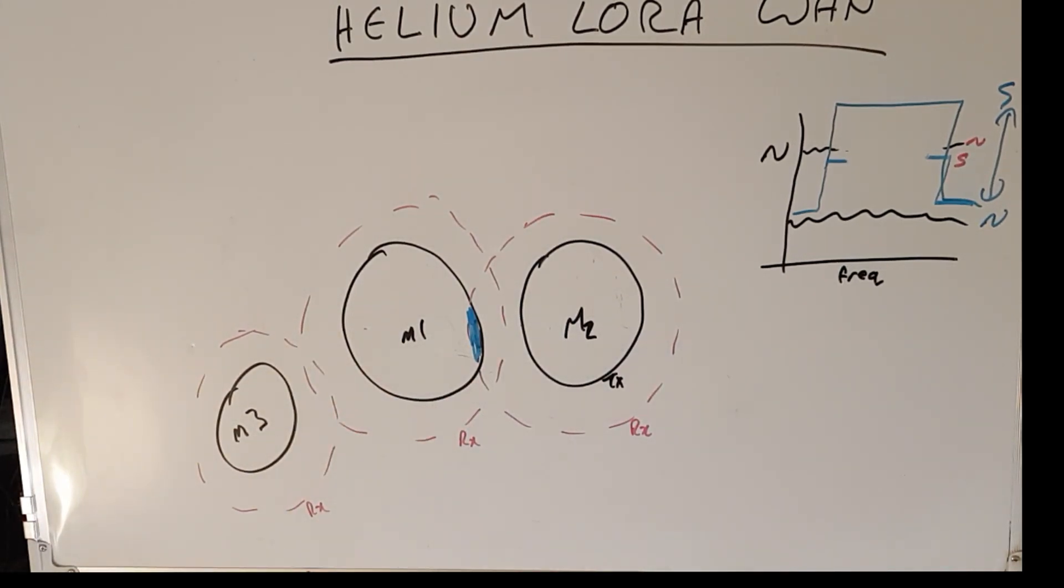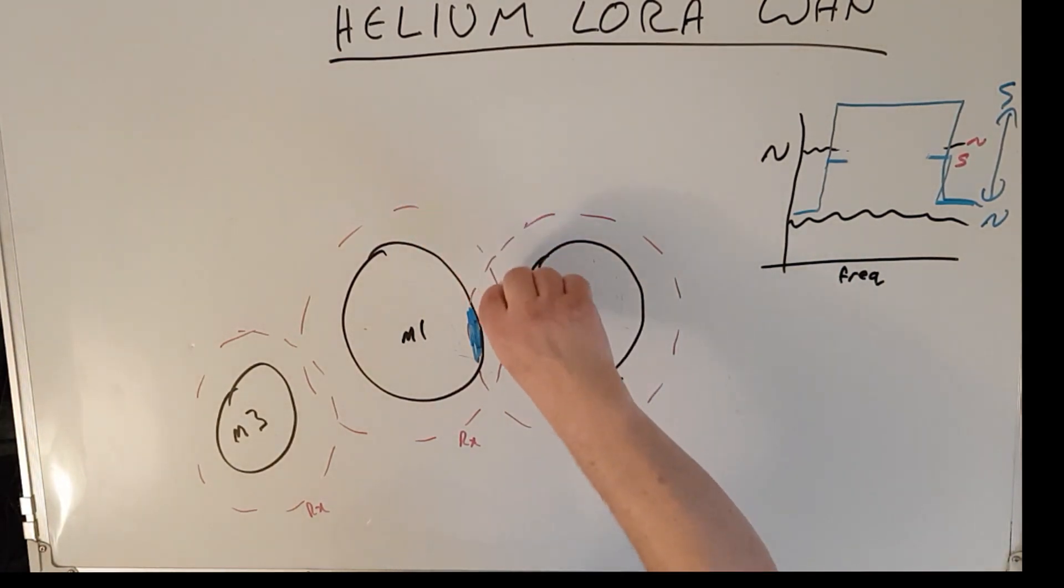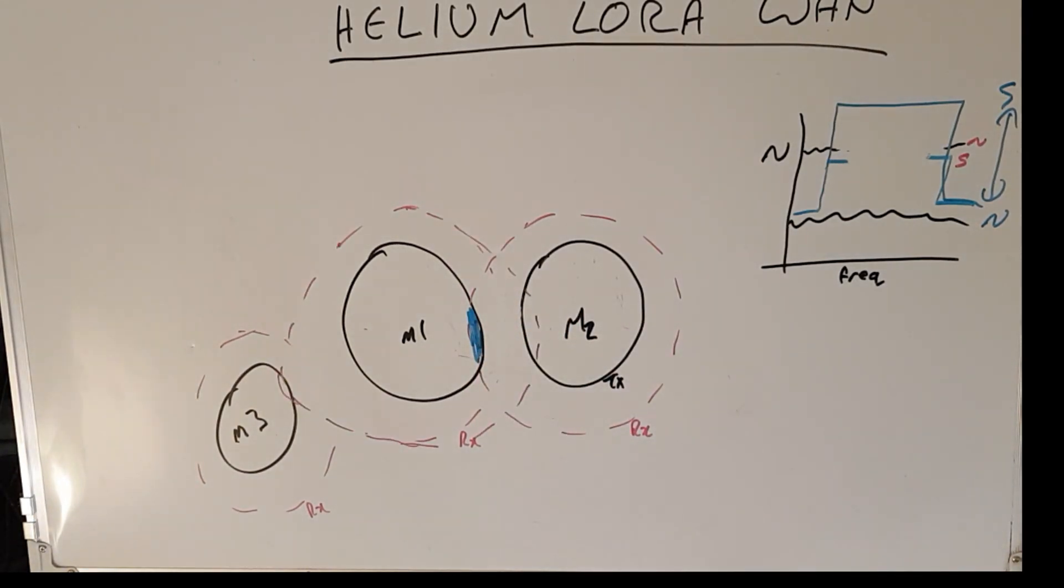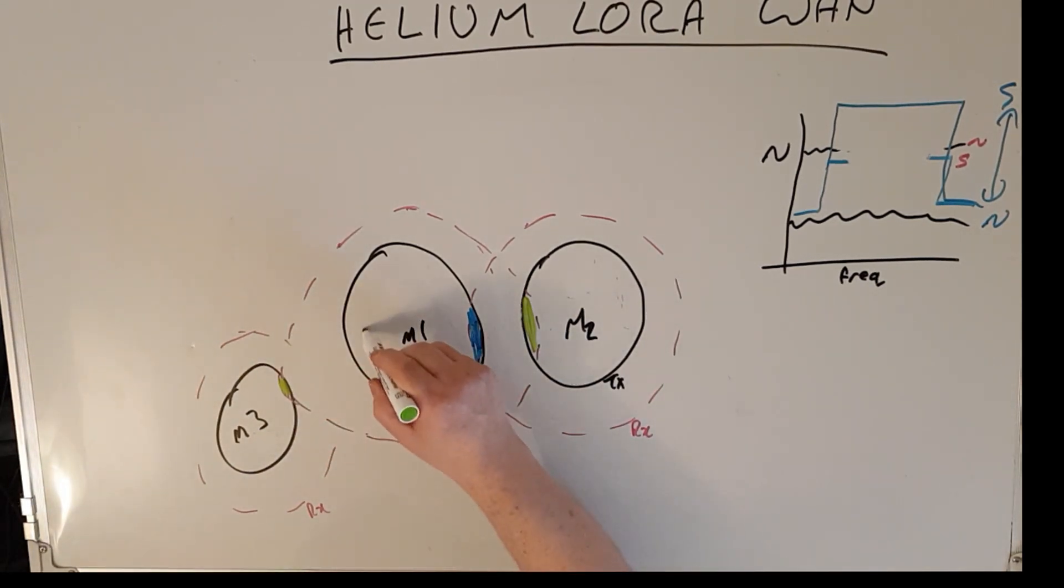Now when we add the likes of the LNA, the filter, the better cables and antenna etc., then the situation changes such that the receive coverage is greater as we can see here. So now we do have overlapping coverage between miner number one's receive and miner number two's transmit beacon, and also a tiny overlap between miner number three's downlink transmit coverage and miner number one's receive coverage. And so now miner number one is a witness to miner number three's beacon, and it's also a witness to miner number two's beacon. And so as a result of all this, we now have two more witnesses. That's how we earn more HNT.